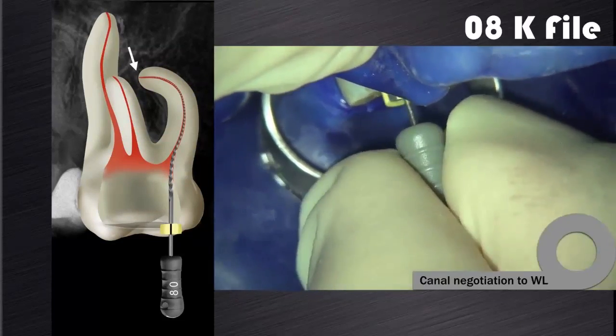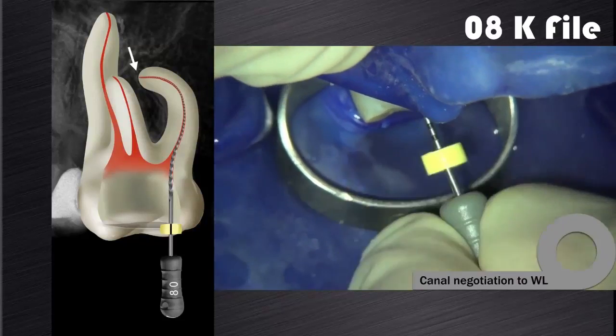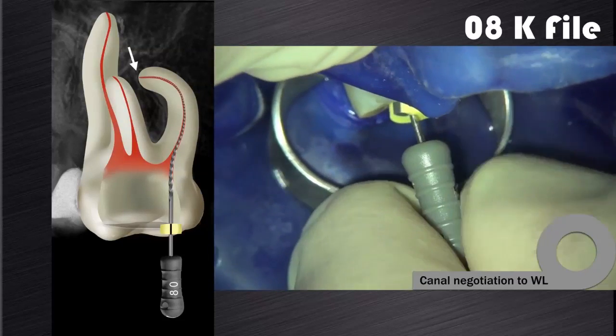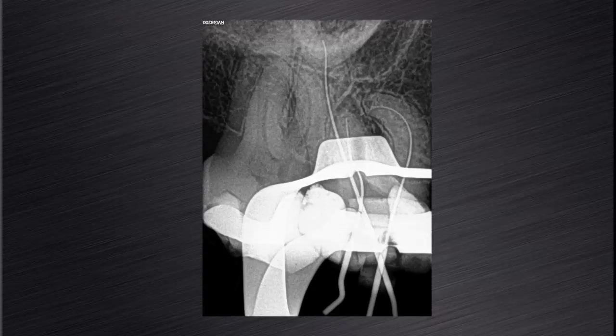You will be amazed to see how many times this protocol enables the same hand file that hung up to progress to full working length or to patency. Here we can see the periapical radiograph of my working length radiograph, clearly illustrating the complex anatomy of the meso-buccal root canal system.